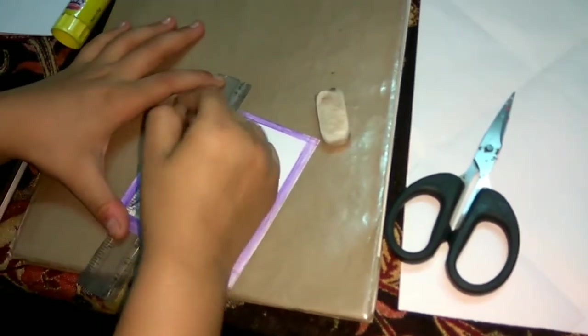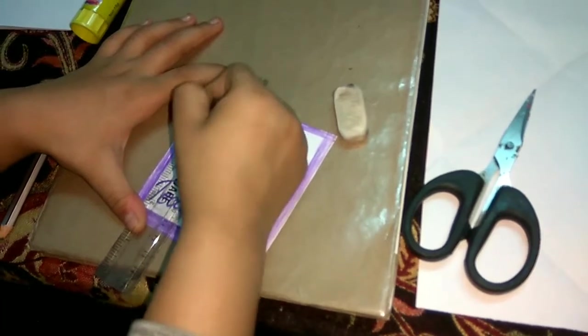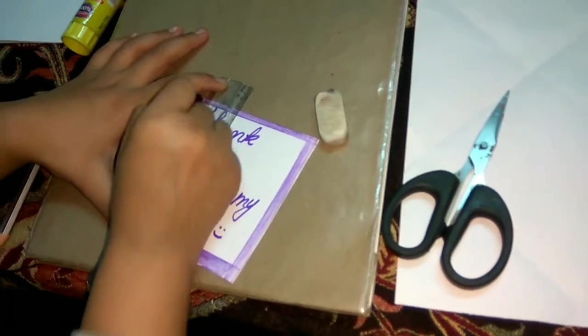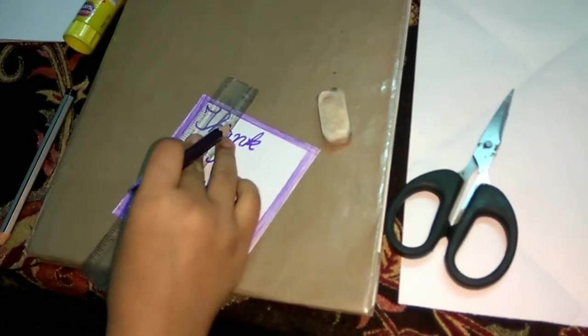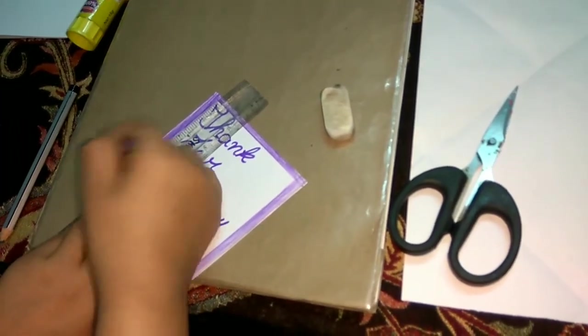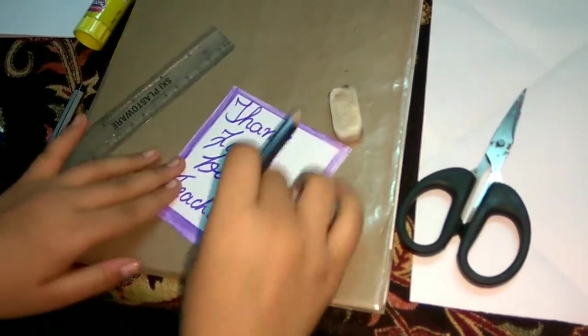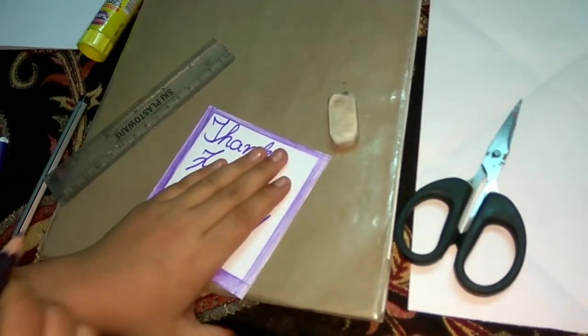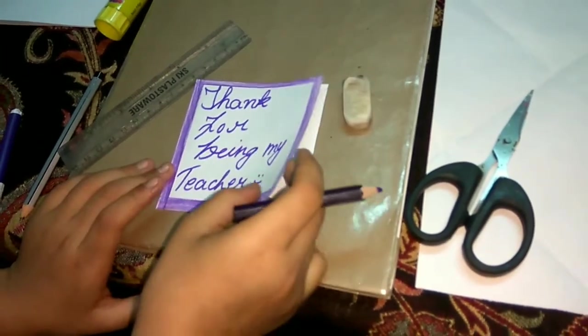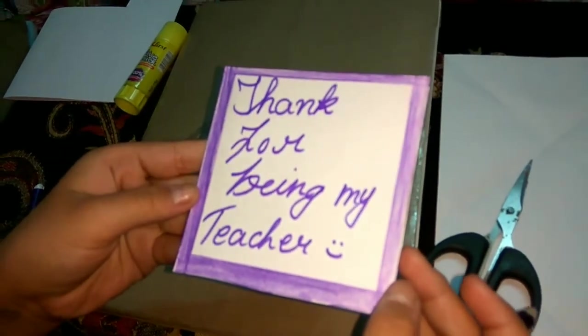Now we're going to take our ruler as a guide and color the sides. We're going to continue coloring till we complete the end. Make sure you use a bright color - if you're using red, you can also use an orange sketch pen to write the quotation. So our border coloring is all done, looking fabulous.